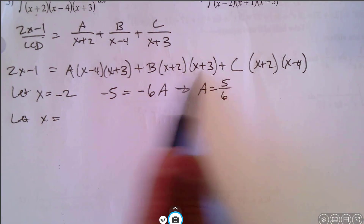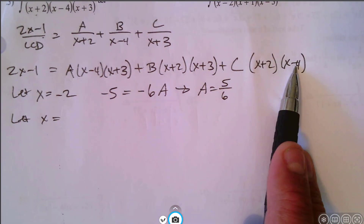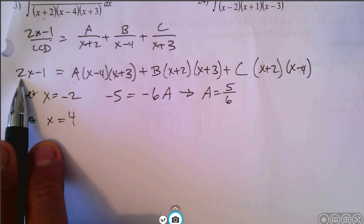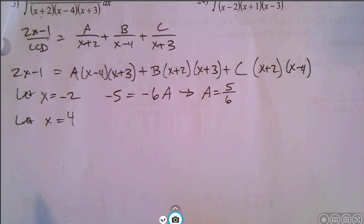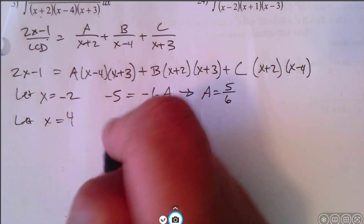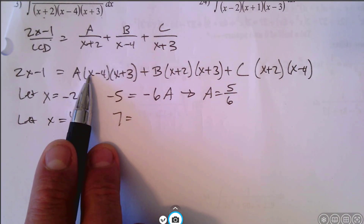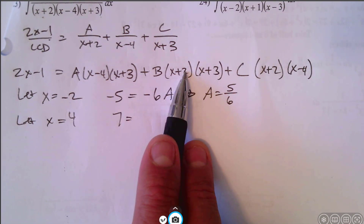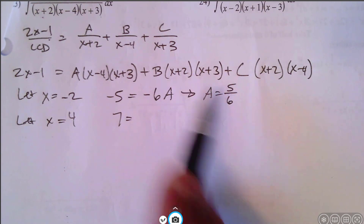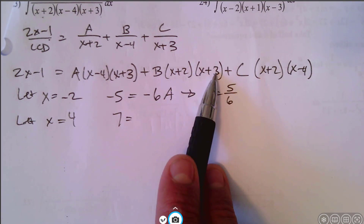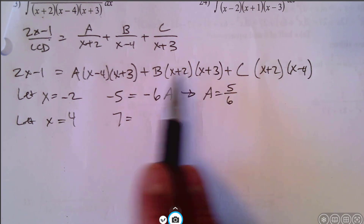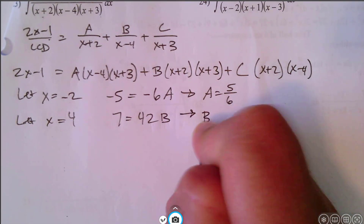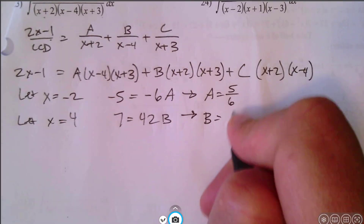If we let x equal negative 2: on the left, 2 times negative 2 minus 1 is negative 5. On the right, negative 2 minus 4 is negative 6, and negative 2 plus 3 is positive 1, so we have negative 6 times a. That gives us a equals 5 sixths. Next, let x equal 4 to solve for b: 2 times 4 minus 1 is 7. On the right, 4 plus 2 is 6, and 4 plus 3 is 7, so 7 equals 6 times 7 which is 42 times b. That gives us b equals 1 sixth.